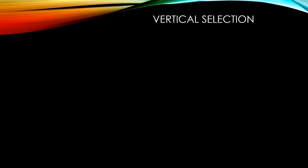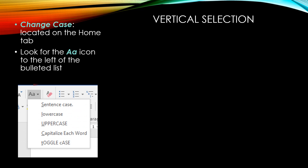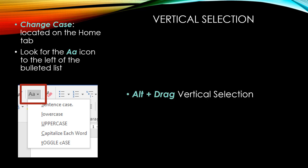Vertical selection. When you are working with your memorandum, you will need to be able to vertically select — that means selecting up and down rather than horizontally across. So we want to find our Change Case feature, which is located on the Home tab. We are going to look for the big A, little A icon to the left of the bulleted list. Then we are going to use Alt plus drag for vertical selection.